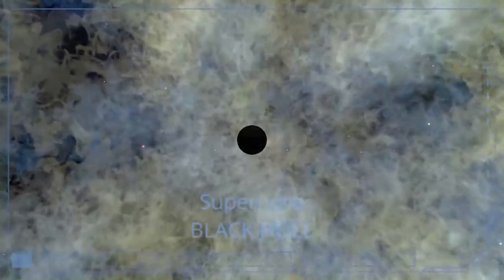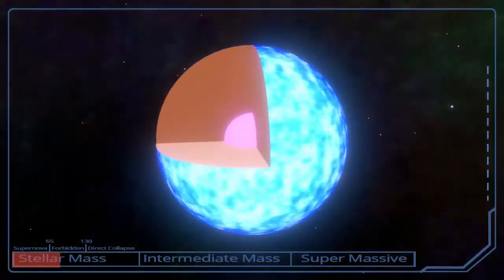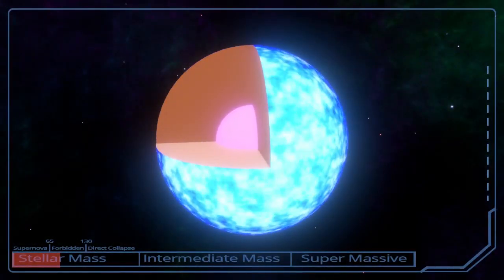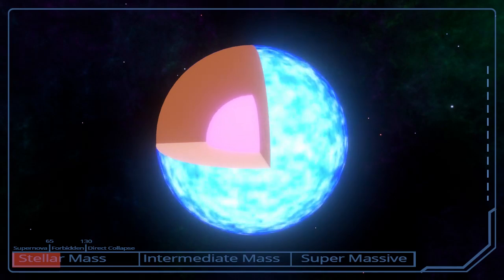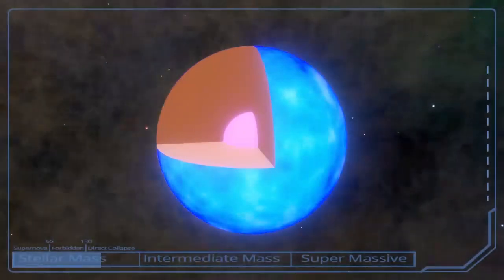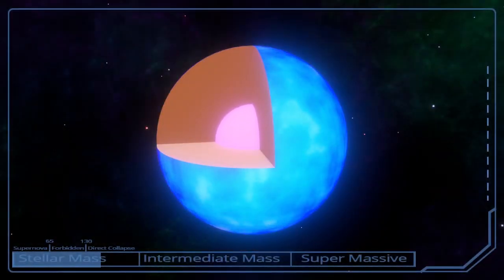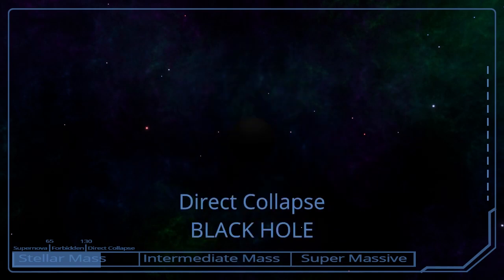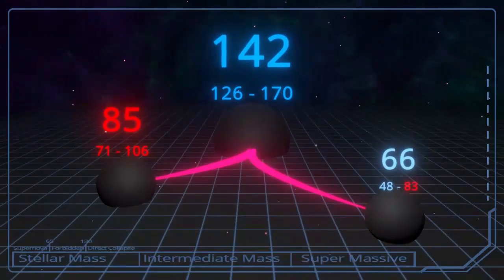But stars of the core mass over 65 times the Sun destroy themselves completely, leaving nothing behind. However, stars of the core mass over 135 solar masses avoid this total destruction, collapsing directly into a black hole. So black holes between 65 and 135 solar masses should not exist.